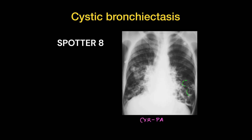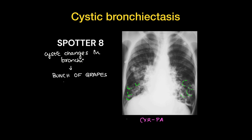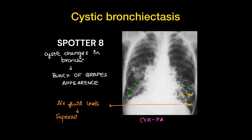On x-ray here you can see a multiple bunch-of-grapes appearance of dilated bronchi — cystic bronchiectasis or cystic changes in the bronchi. Some of them show air-fluid levels, meaning there is secondary infection in the already dilated and ectatic bronchi.